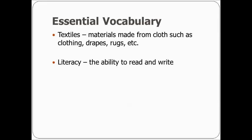Some essential vocabulary for this video. First of all, textiles — they are materials that are made from cloth, such as the clothing you're wearing, drapes that hang over your windows, and rugs. The word literacy is the ability to read and write. For example, the adult population in the United States has 99% literacy, meaning 99% of adults in the United States can read and write.